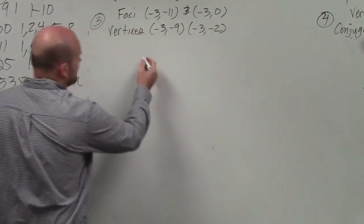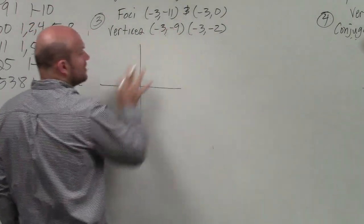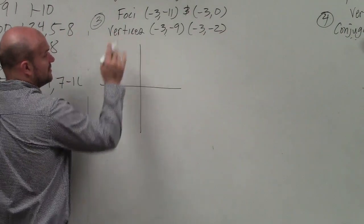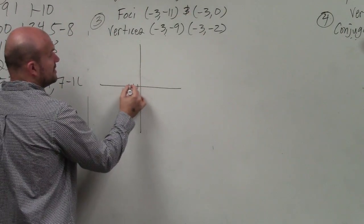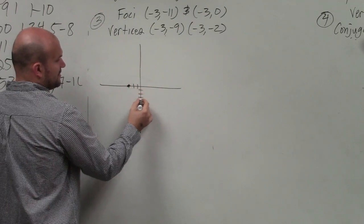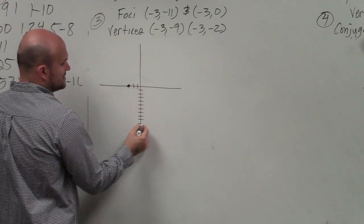So please plot the points, especially when you're given two sets of points here. So the foci are at negative 3, 1, and negative 3, 11.